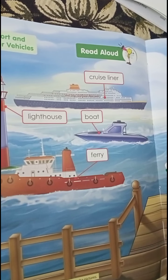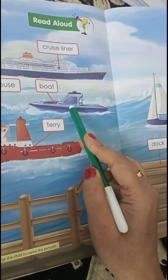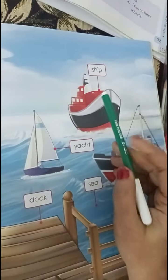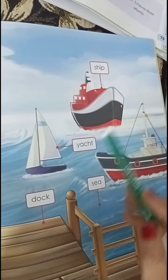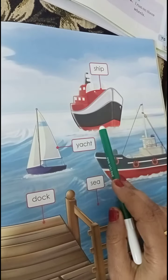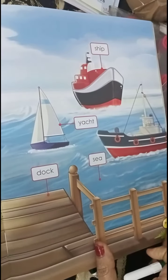Next: water vehicles. These vehicles will move on water — they sail in water. Boat, ferry, ship, yacht. This is also a ship. Ship, yacht, boat, ferry — so these vehicles sail in water.